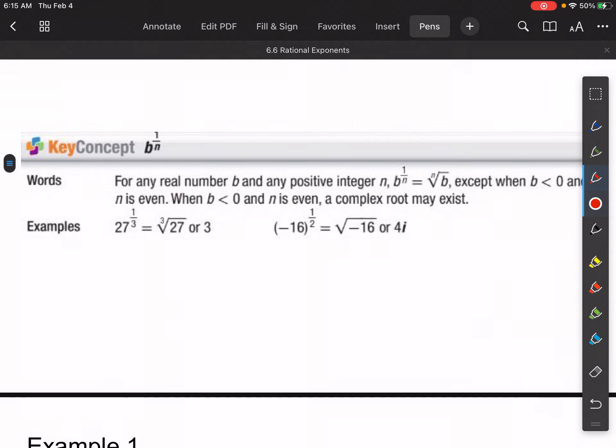If I have b to the one over n, that's essentially just the nth power. Notice that the n is in the denominator here. That becomes the nth root of b.